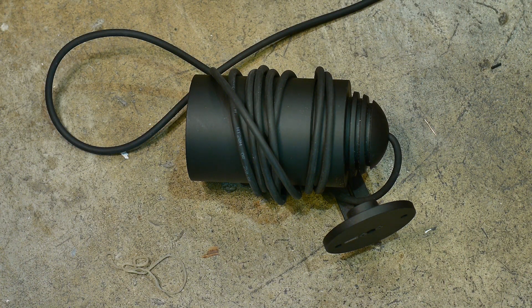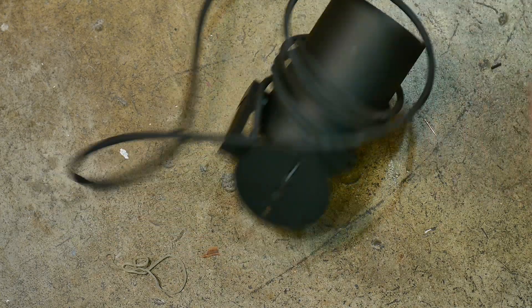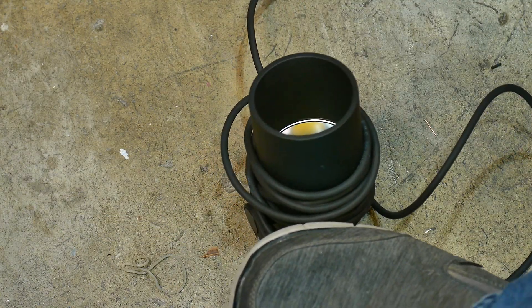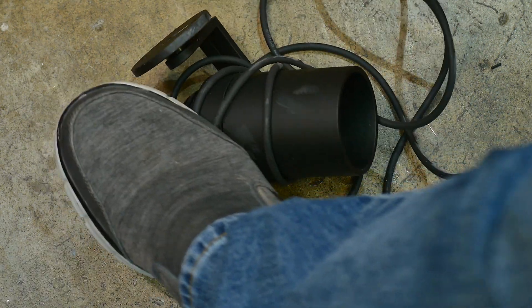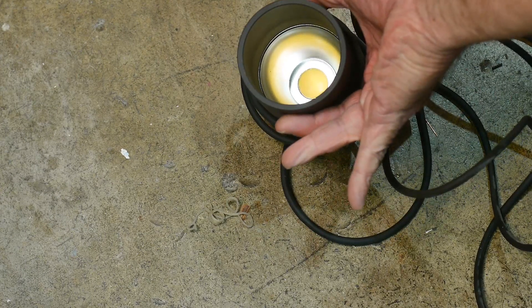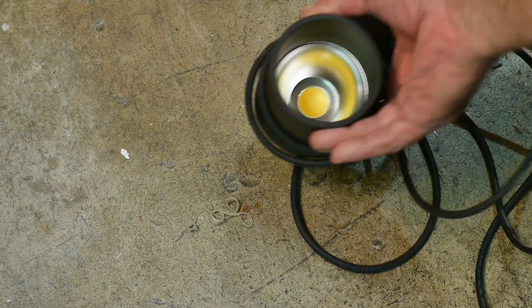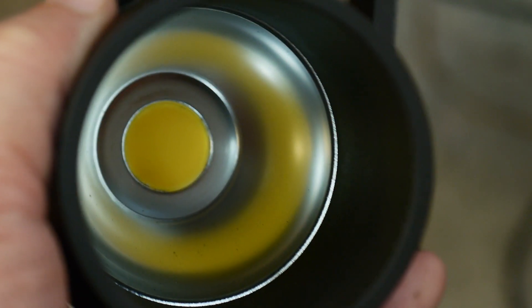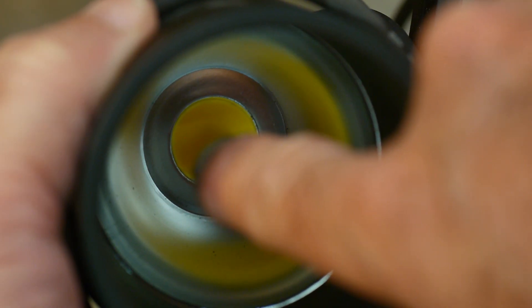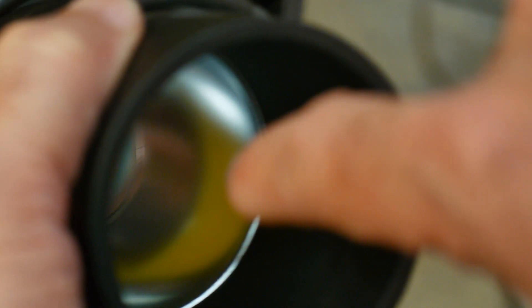So I don't really have the right lens for this. All right, there we go. That's a better picture. So this is a light, and it has a reflector in there. So you can see that chip on board down there. And then this is a parabolic reflector.